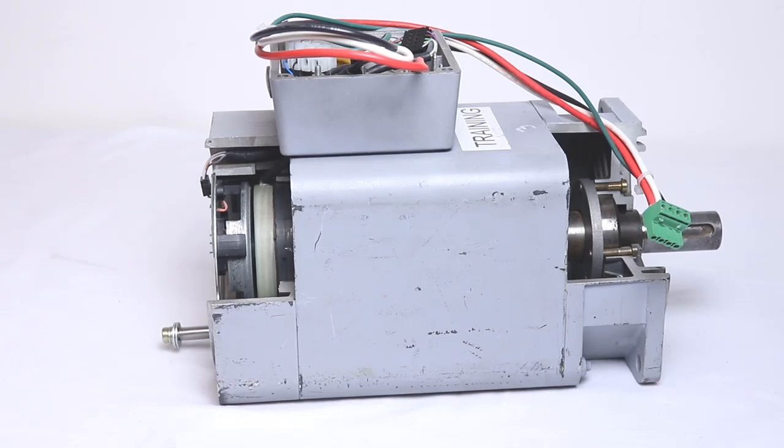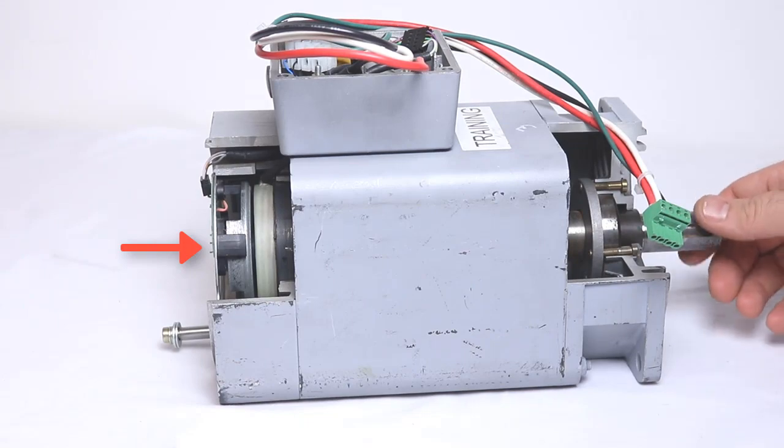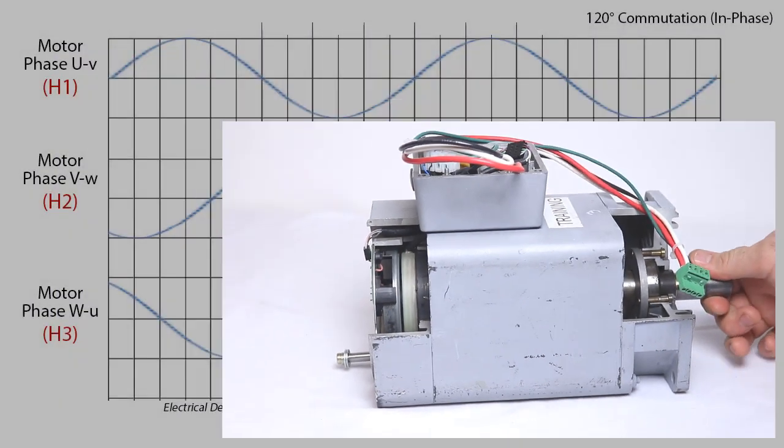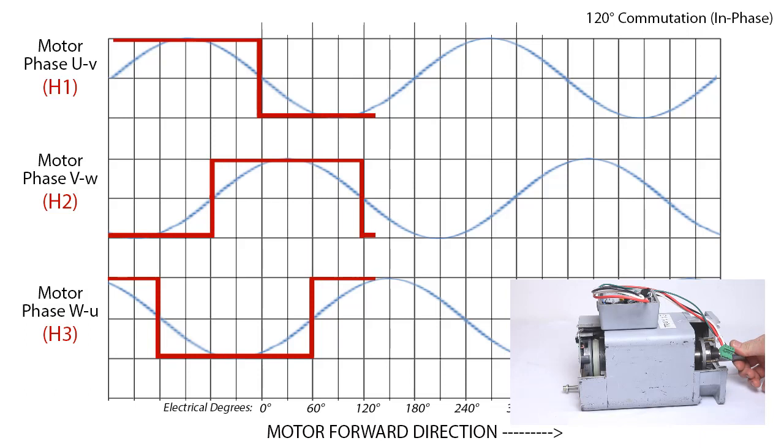One of the oldest types of servomotor feedbacks is the Hall Effect or commutation pulse sensor. This feedback generates three square wave pulses which are intended to align with each of the three motor phases.